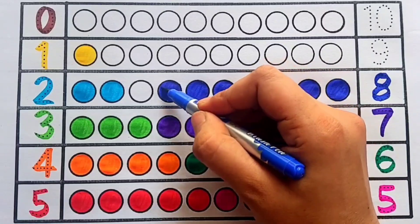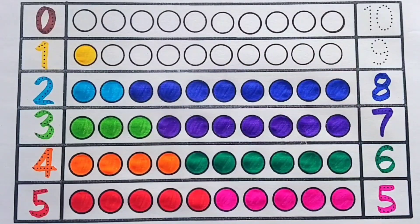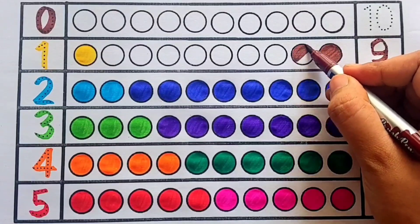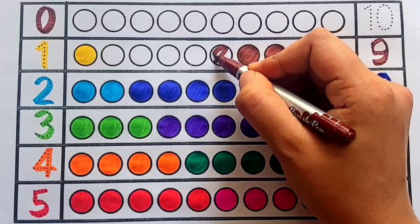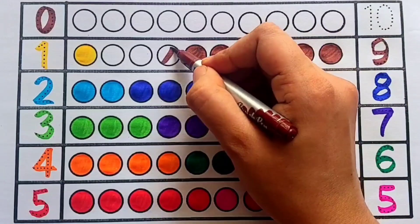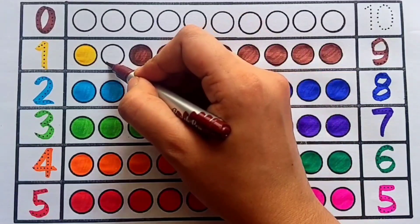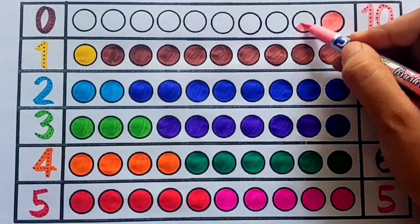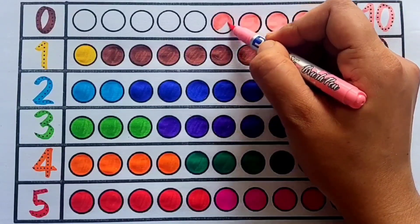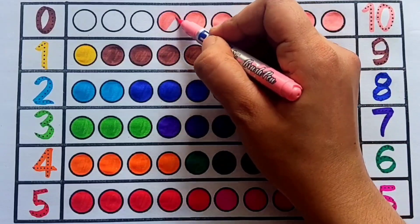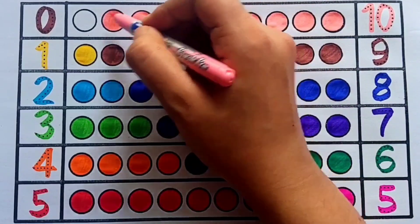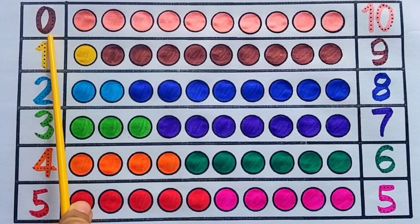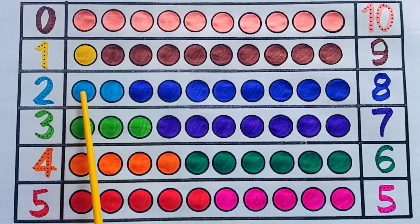Eight: eight circles — blue color. Nine: nine circles — brown color. Ten: ten circles — light pink color.